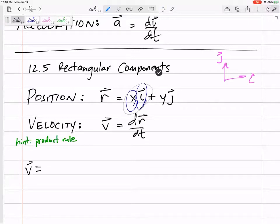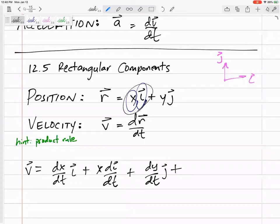the derivative of this using the product rule would be dX/dt times i plus X di/dt. It's the derivative of the first times the second plus the first times the derivative of the second. So that first term really has two terms. And then this next term, dY/dt j plus Y dj/dt.